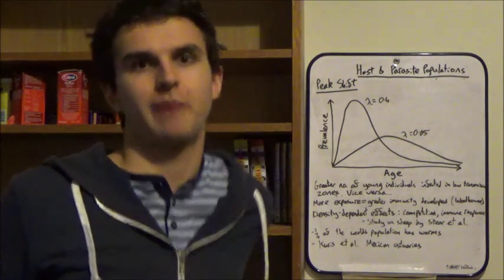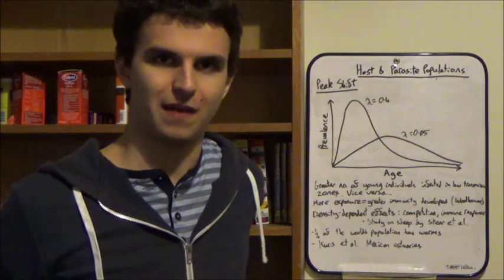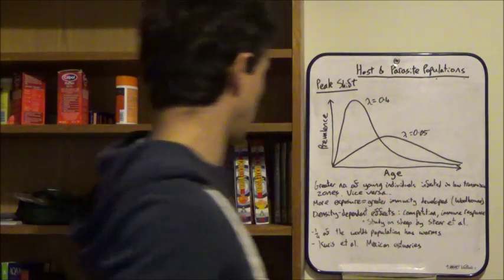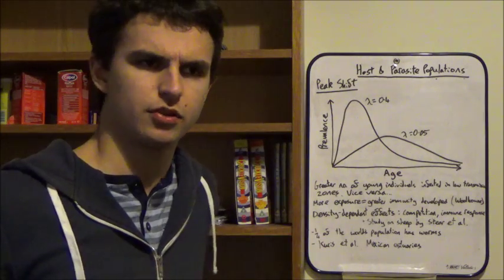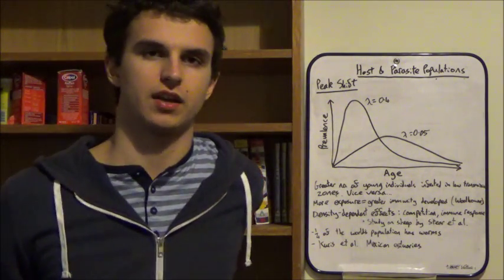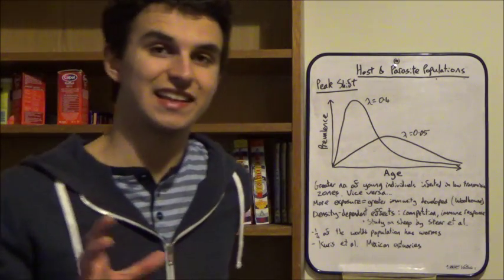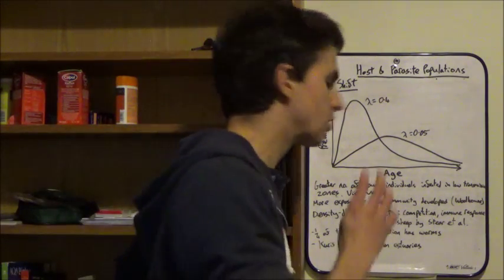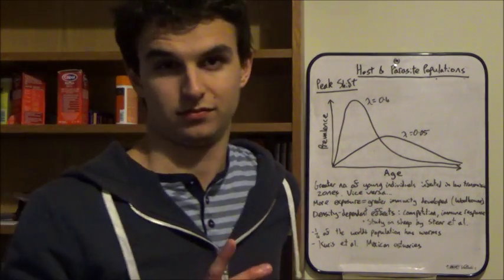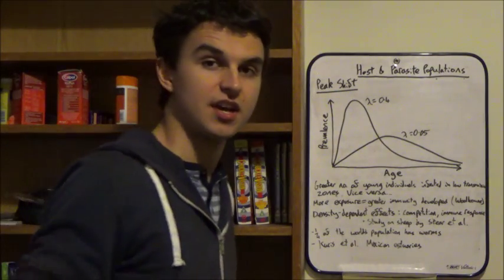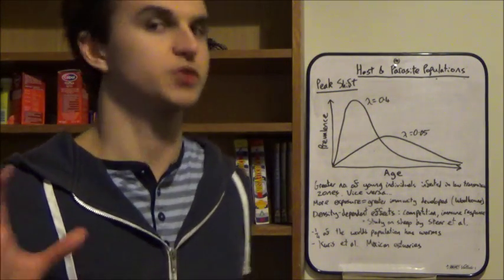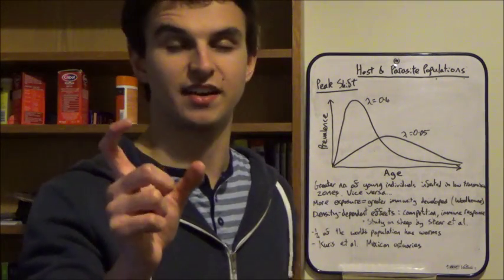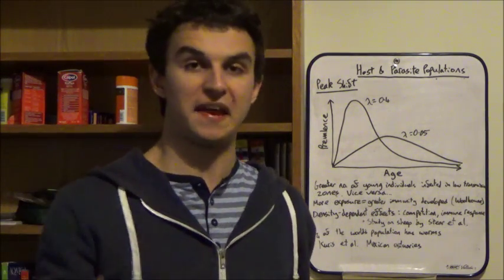We've talked about all the things that control host-parasite populations and discussed how important parasites are in ecosystems. WHO data: a quarter of the world's population has worms — mostly in the tropics, such as sub-Saharan Africa. Looking at a natural ecosystem, Curious et al. looked at three estuaries in Mexico and found that 1% of all animal biomass was parasites. In fact, the biomass of parasites was equal to the biomass of fish in the estuary.